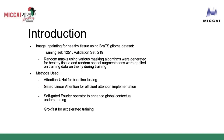We distributed the BraTS Glioma dataset into a training set and a validation set. The training set had about 1,200 training samples and the validation set had about 200 validation samples. We used randomly generated masks using various masking algorithms for the healthy tissue region only.